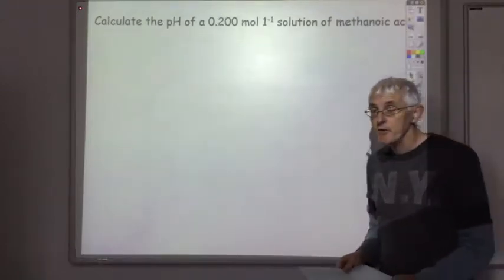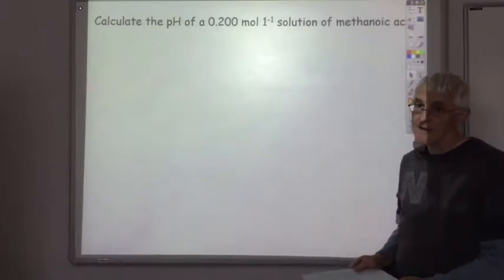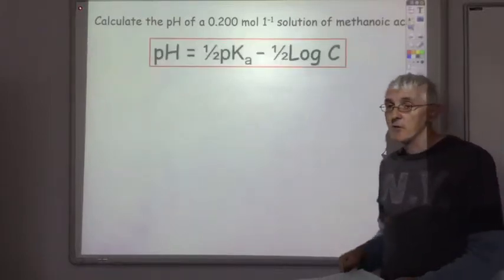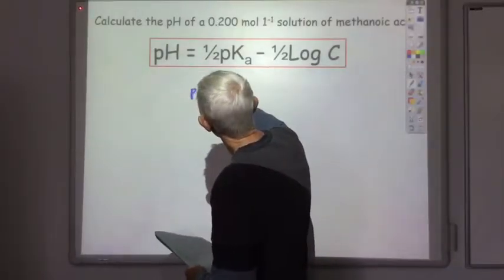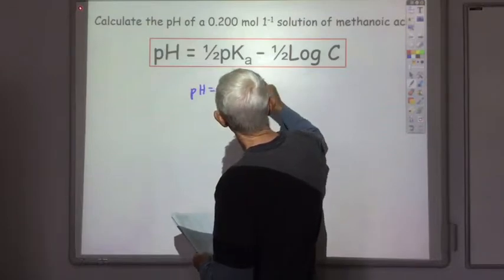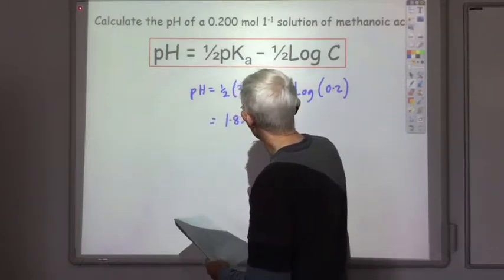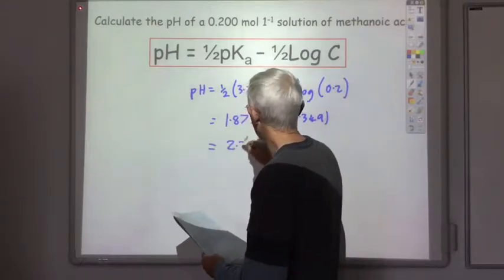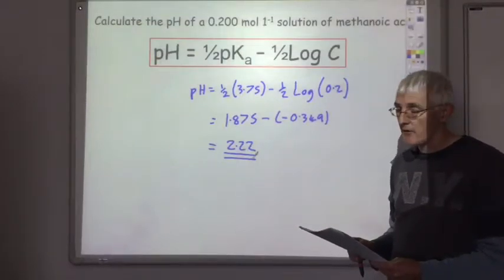Here's another example for you to try: calculate the pH of a 0.2 mol per litre solution of methanoic acid. Methanoic acid is a weak acid, so use this formula to work out its pH. Stop the lecture, work through this, and then I'll give you the answer. You should have got a pH of 2.22.